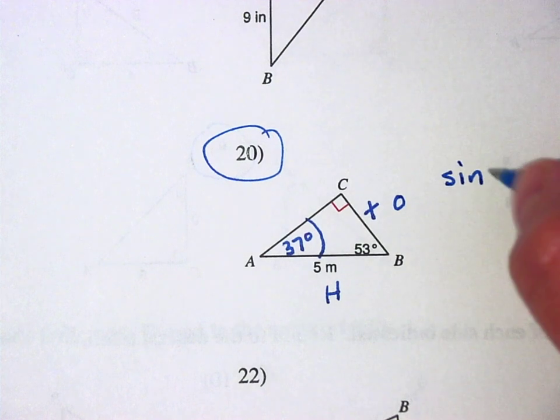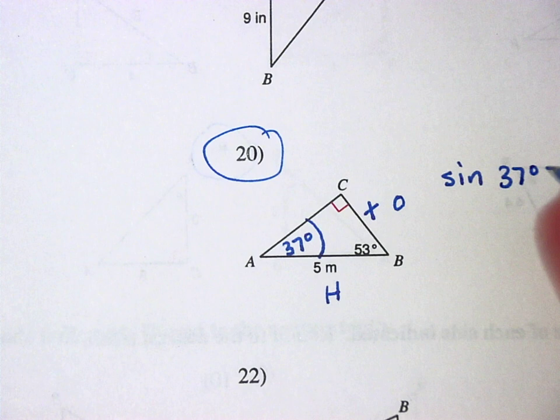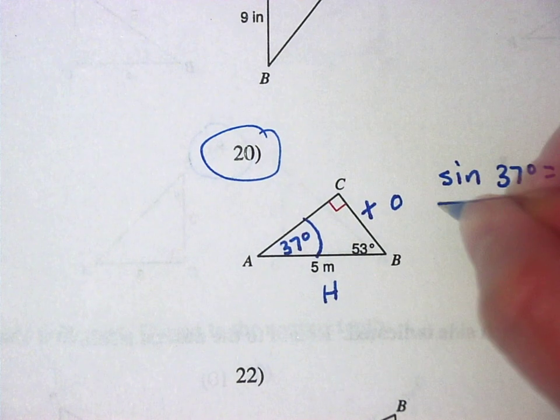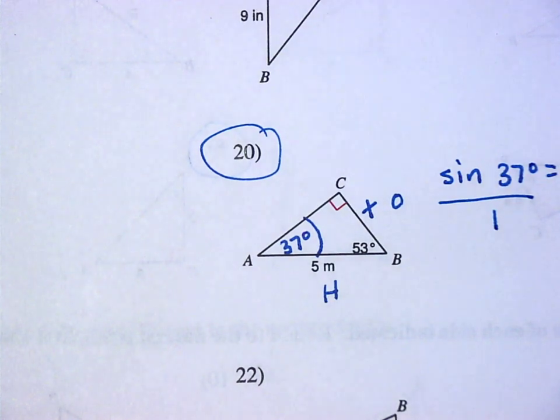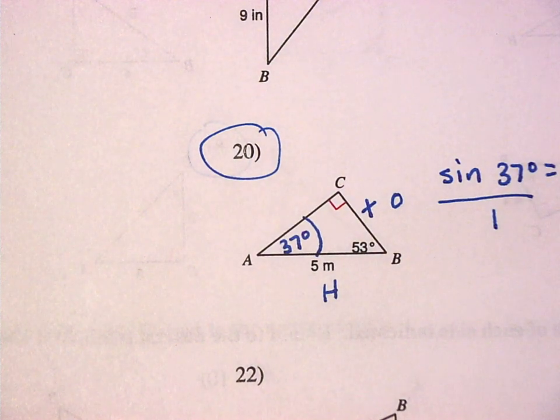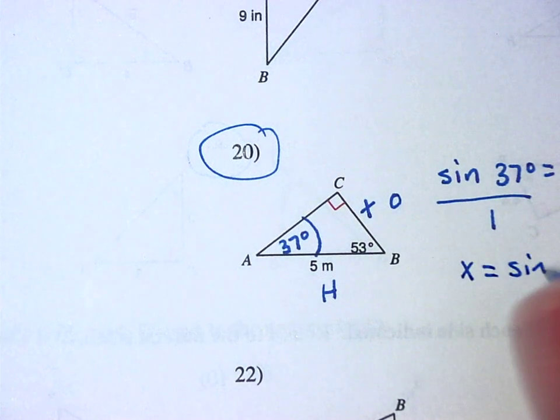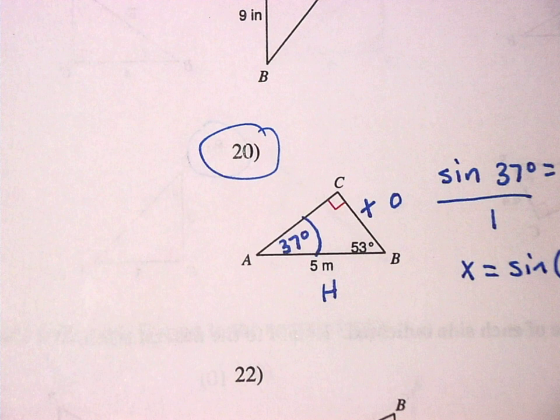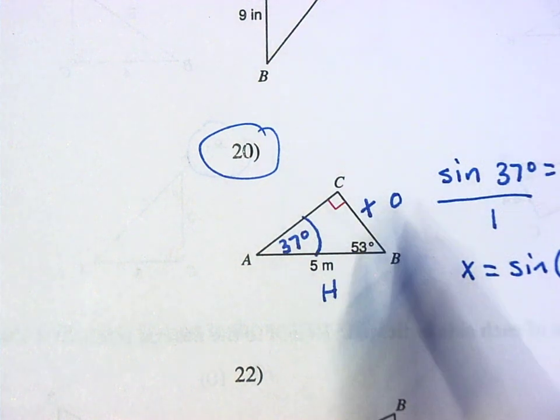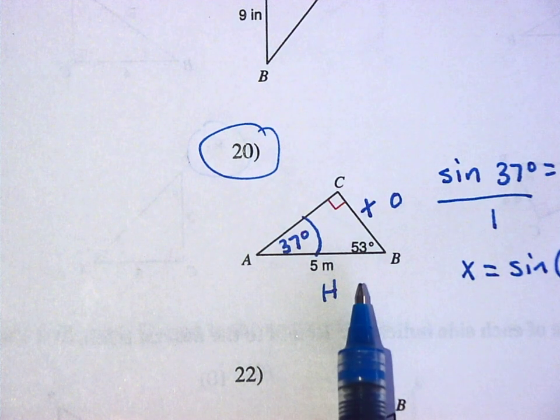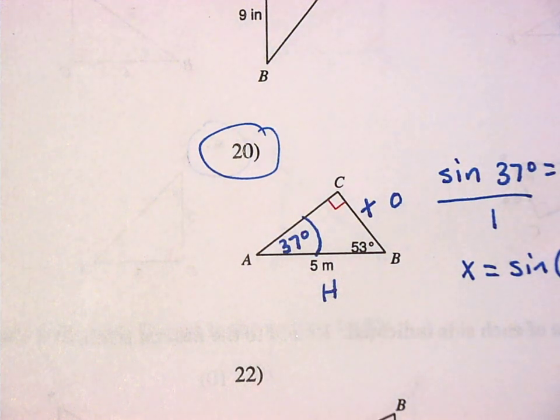So sine of. And if you have to write SOHCAHTOA on the top of every paper, do it. Okay? All right. So sine of. What did we say? 37? Yep. Is equal to opposite over hypotenuse. Do you guys understand how there's a lot of different ways you can tackle this problem? Pick a side. Pick an angle. Lots of different ways to do it. So to find out X, you're going to have to take 5 times the sine of 37 in your calculator. These ones are pretty much to scale. You should get something smaller than 5 right now. Right? So what did you get?